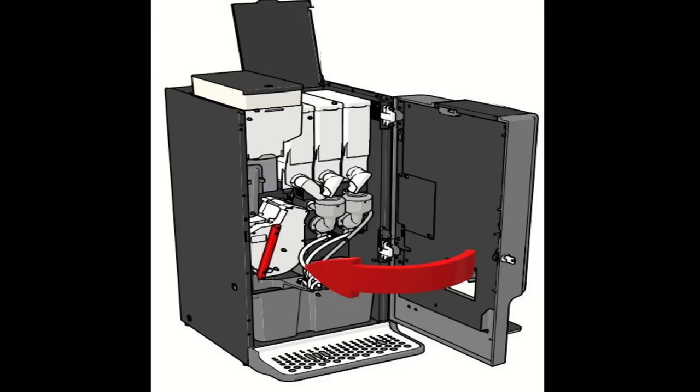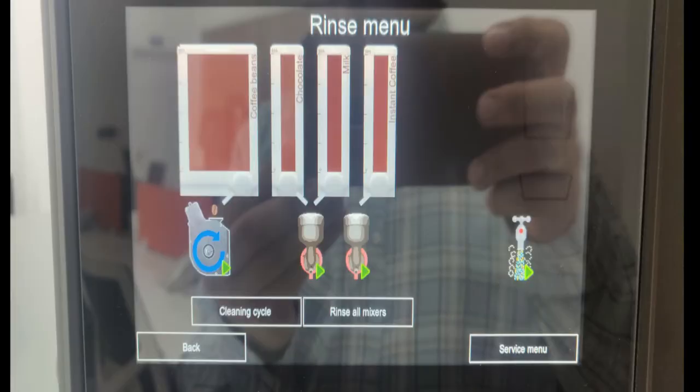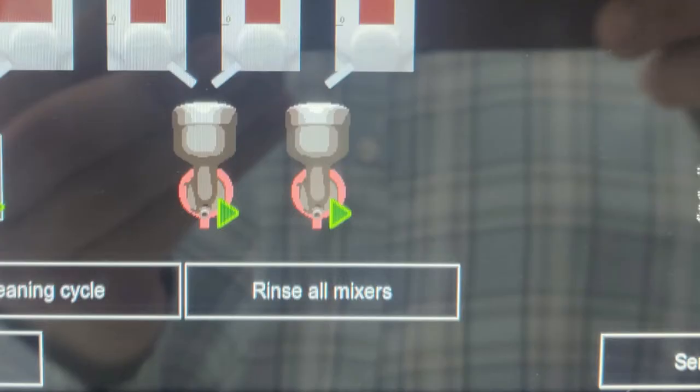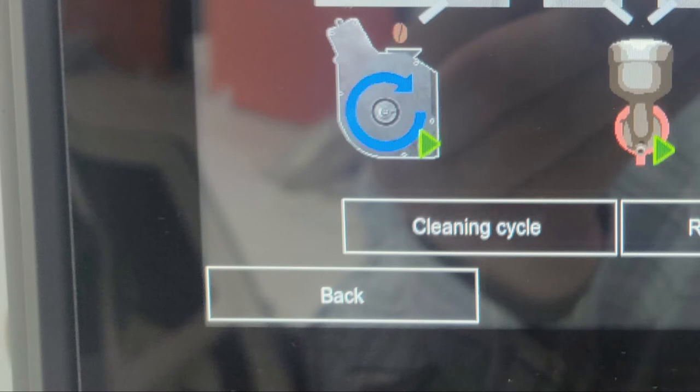After closing, the rinse menu will show on the screen. Place container underneath the outlet or dispense area. Then select rinse all mixers. Close the door and press the back option on the screen to leave the rinse menu and to resume normal operation.